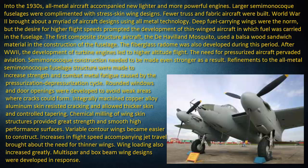After WWII, the development of turbine engines led to higher altitude flight. The need for pressurized aircraft pervaded aviation. Semi-monocoque construction needed to be made even stronger as a result. Refinements were made to increase strength and combat metal fatigue caused by the pressurization-depressurization cycle. Rounded windows and door openings were developed to avoid weak areas where cracks could form. Integrally machined copper alloy aluminum skin resisted cracking and allowed thicker skin and controlled tapering. Chemical milling of wing skin structures provided great strength and smooth high-performance surfaces. Variable contour wings became easier to construct. Increases in flight speed with jet travel brought about the need for thinner wings, and multi-spar and box beam wing designs were developed in response.